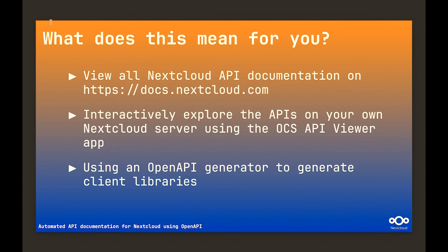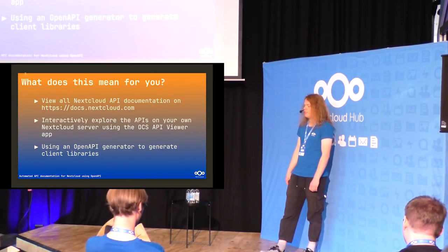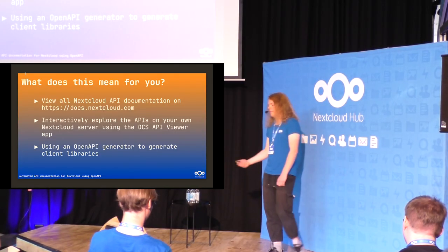Lastly, you can use an OpenAPI generator to generate client code from the OpenAPI specifications. We also have that available for some languages, for example Python and Rust.